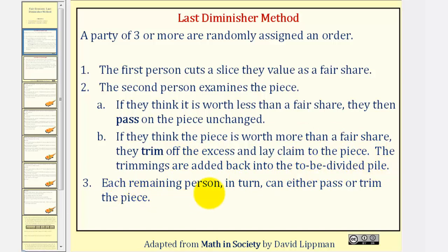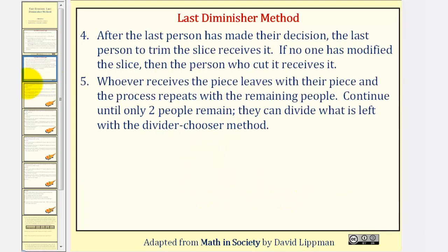Step three: each remaining person in turn can either pass or trim the piece. Step four: after the last person has made their decision, the last person to trim the slice receives it. If no one has modified the slice, then the person who cut it receives it.